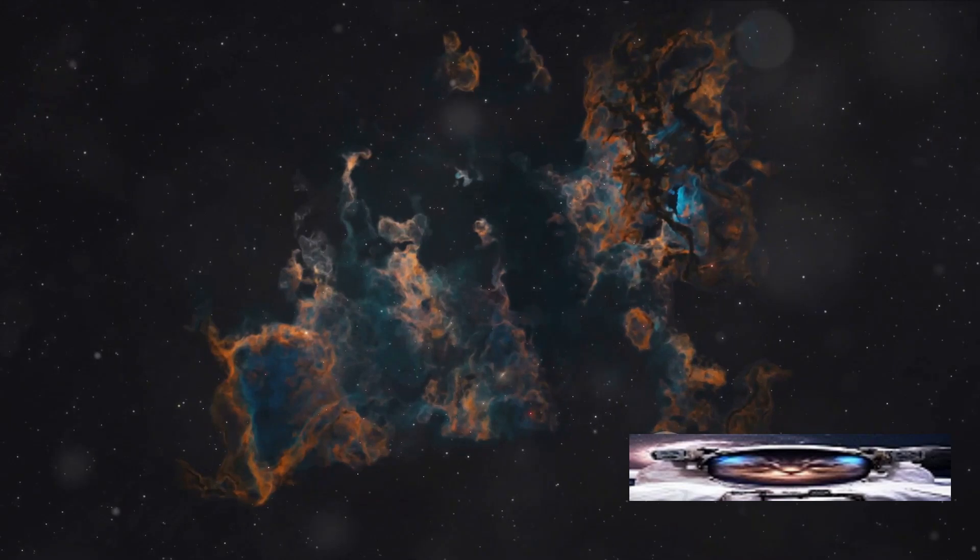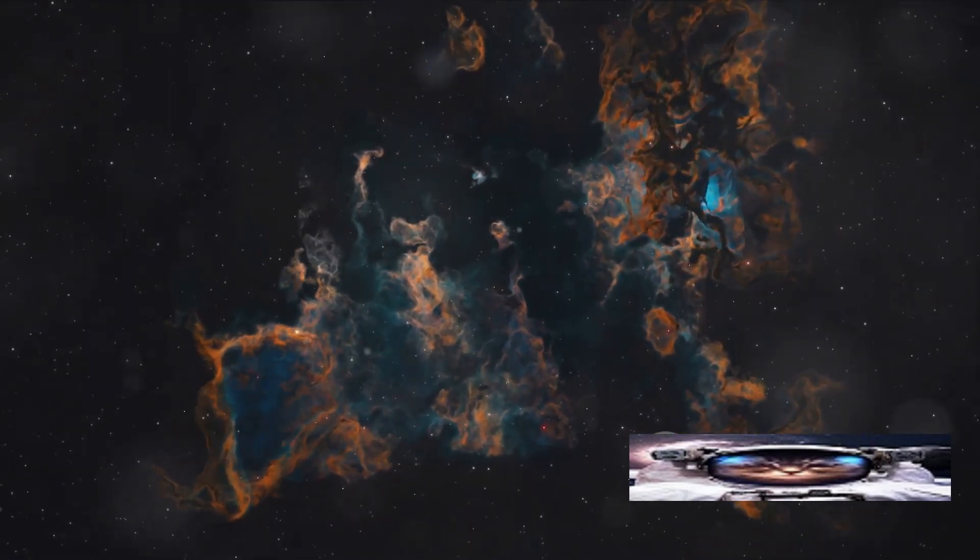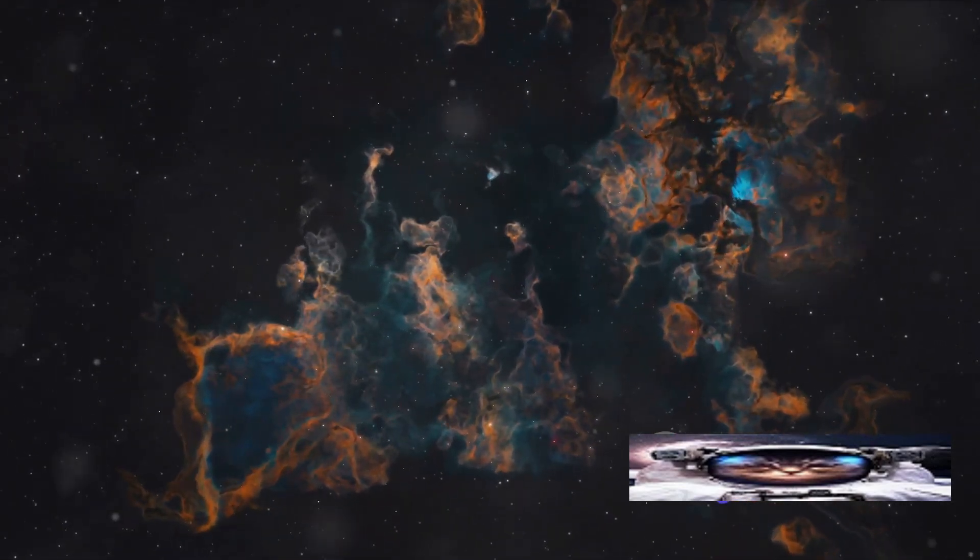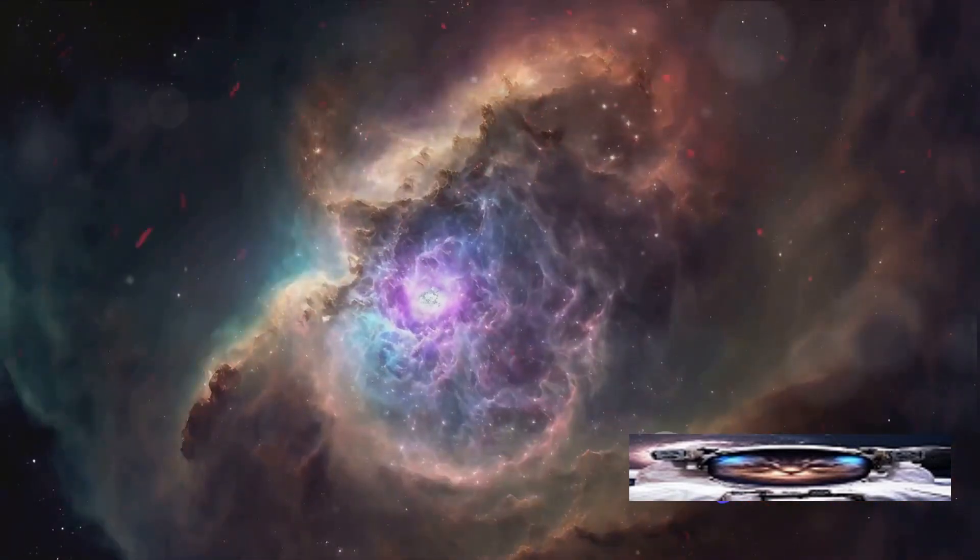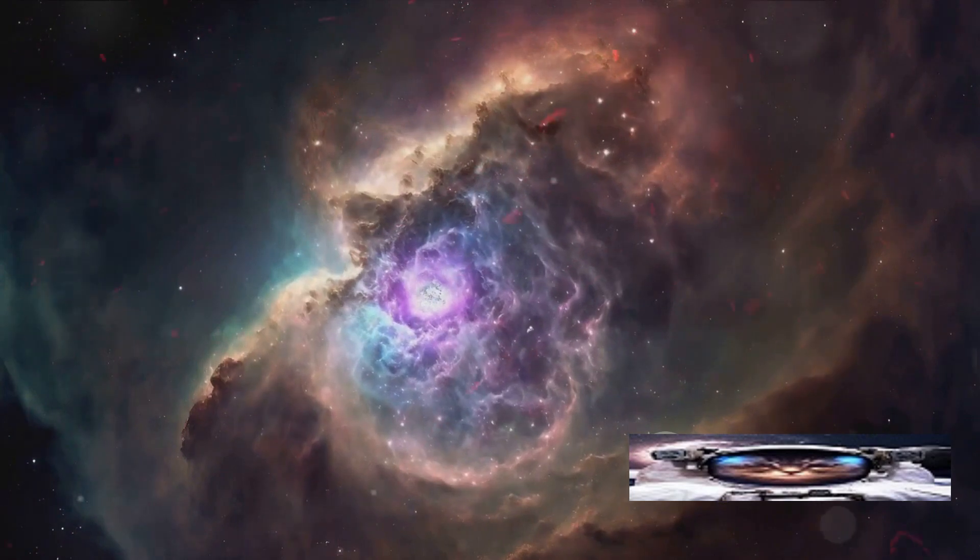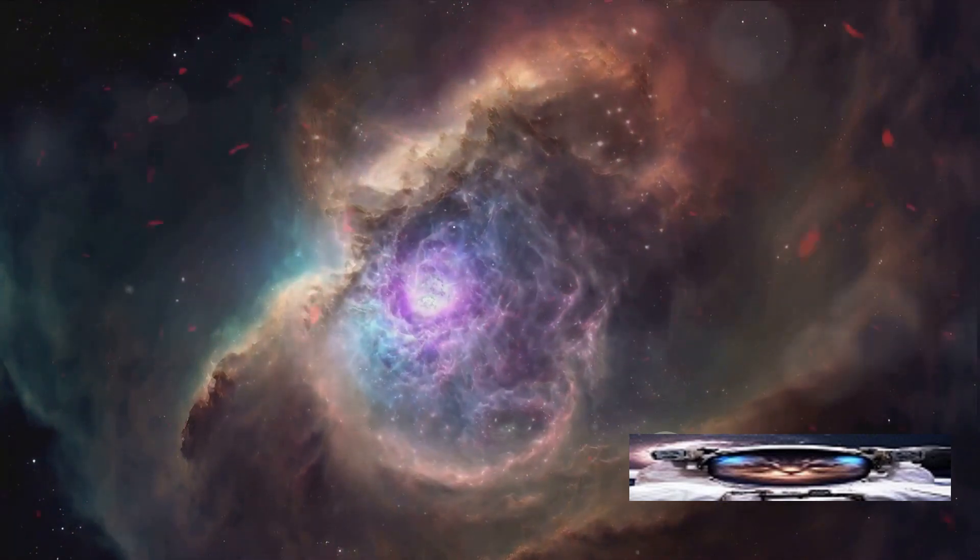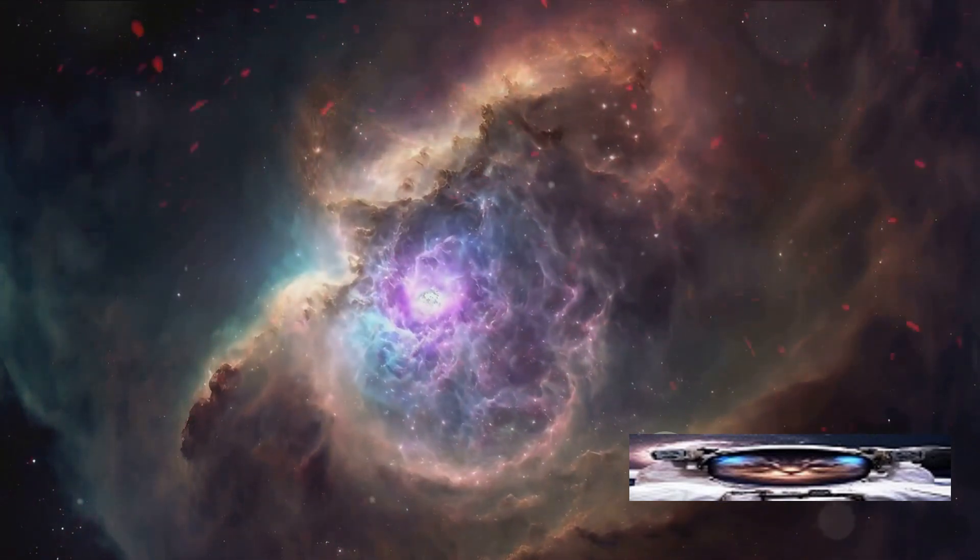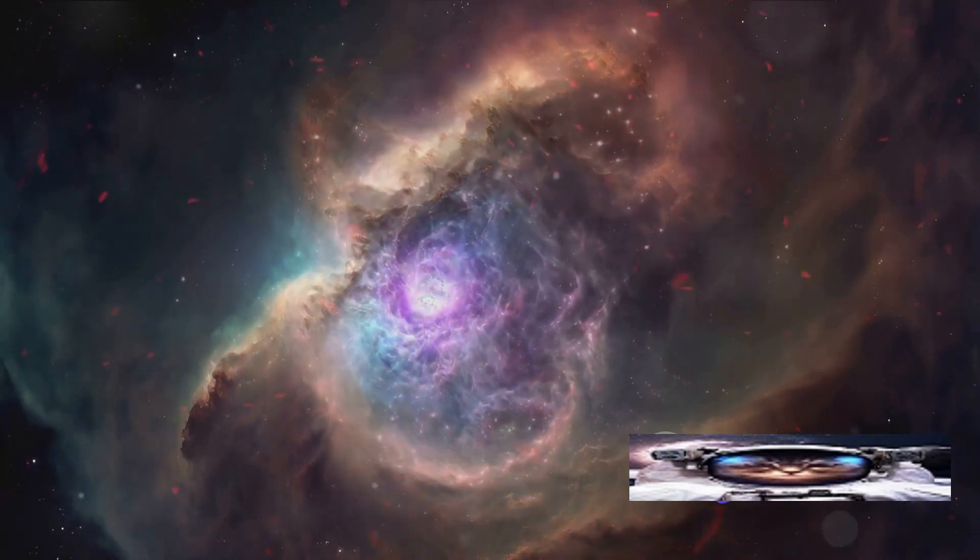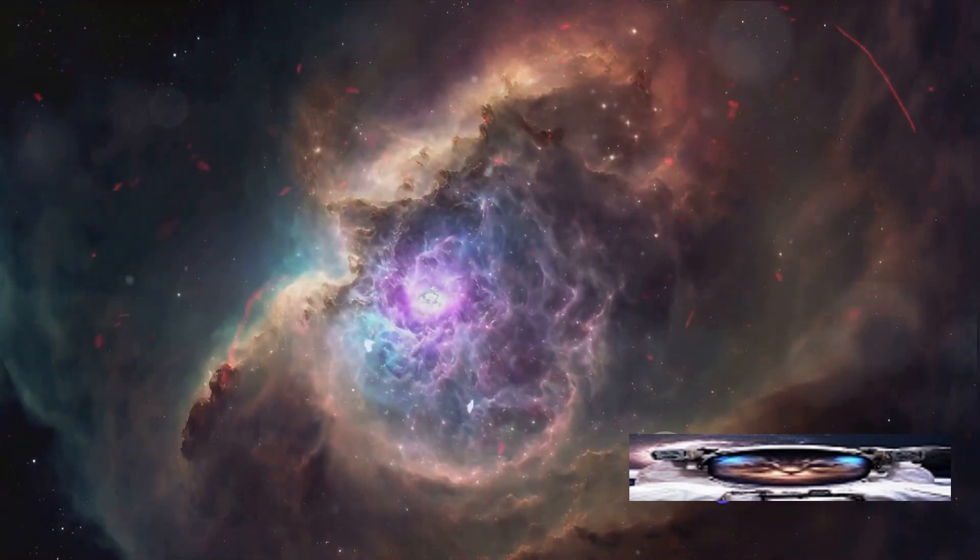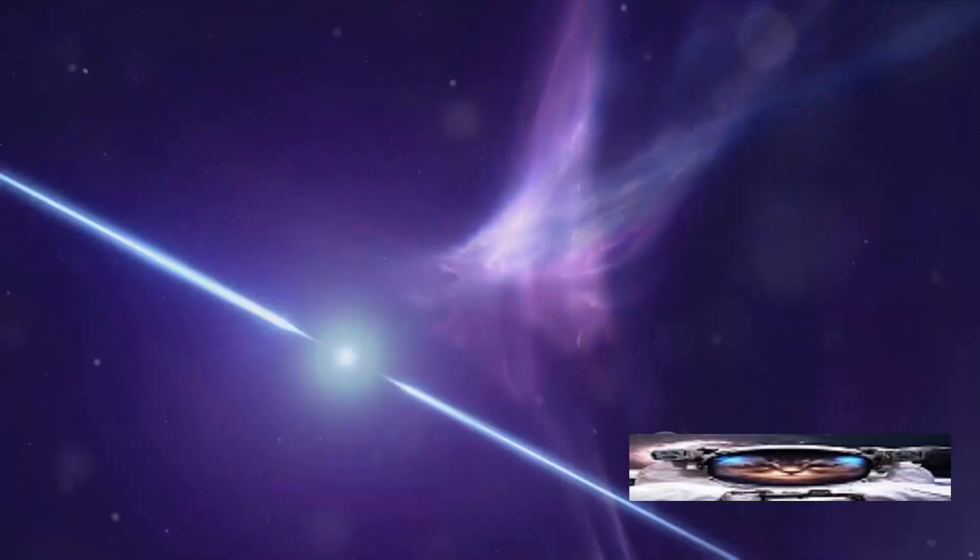Let's start with the basics. Nebulae are vast clouds of gas and dust suspended in the vacuum of space. These gases, primarily hydrogen and helium, are often accompanied by trace amounts of heavier elements such as oxygen, nitrogen, and sulfur. Now, these elements are not just idly floating around. Instead, they are being bombarded by high-energy photons from nearby stars. This interaction between light and gas is what gives nebulae their vibrant hues.